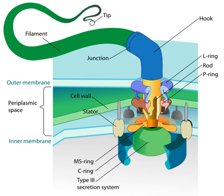Intraflagellar transport — the process by which axonemal subunits, transmembrane receptors, and other proteins are moved up and down the length of the flagellum — is essential for proper functioning of the flagellum, in both motility and signal transduction.